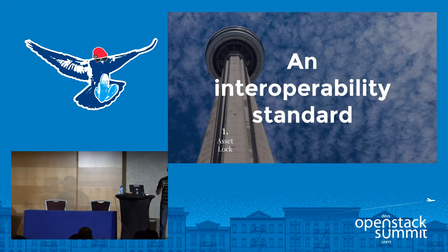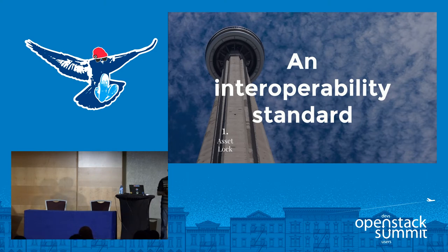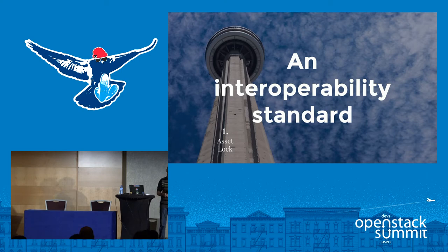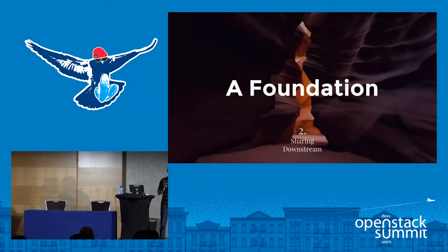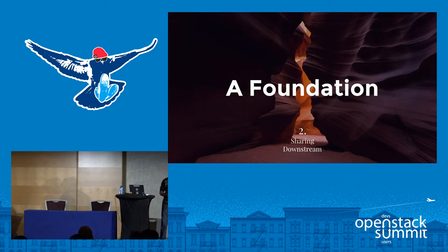The idea is that you should not be able to call yourself or whatever you deploy OpenStack if it doesn't have a basic level of interoperability with other things called OpenStack. That's all the work that the interoperability working group is driving in OpenStack — formerly called the DefCore initiative. And that's an extremely important part of what OpenStack is. On the sharing downstream side, it's the idea that all those organizations need a lot of common work to get their things done, and the more you can share that downstream effort, the better it is.